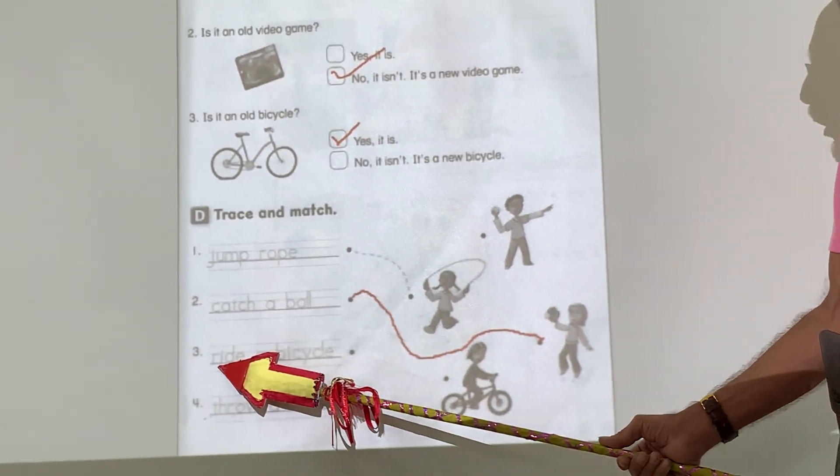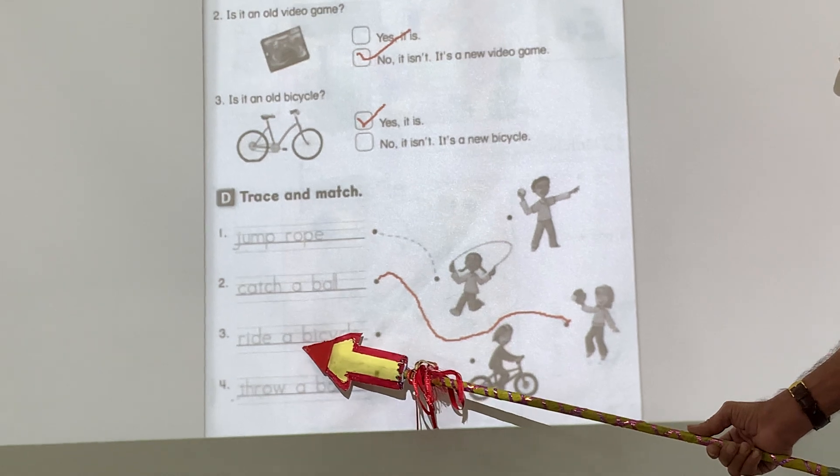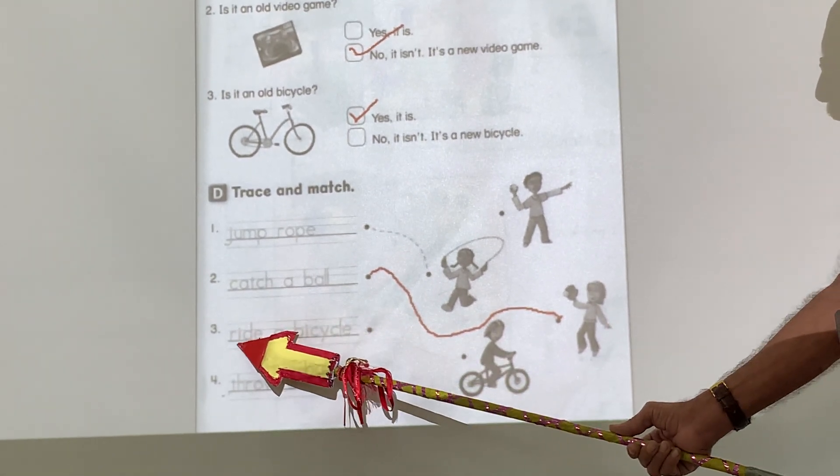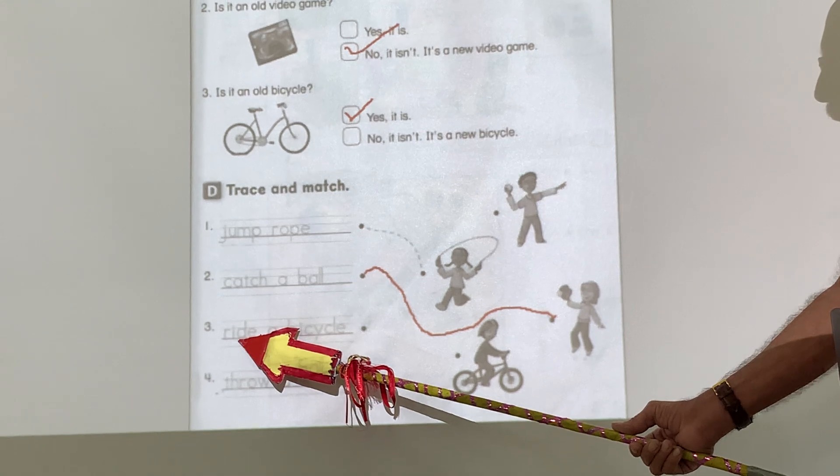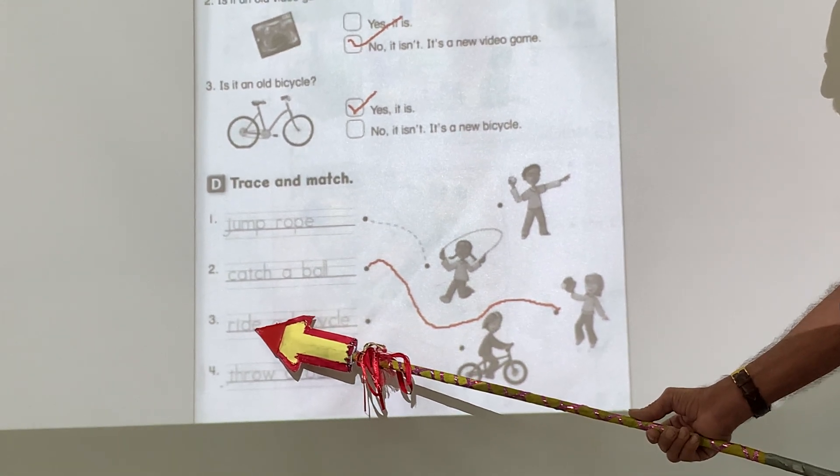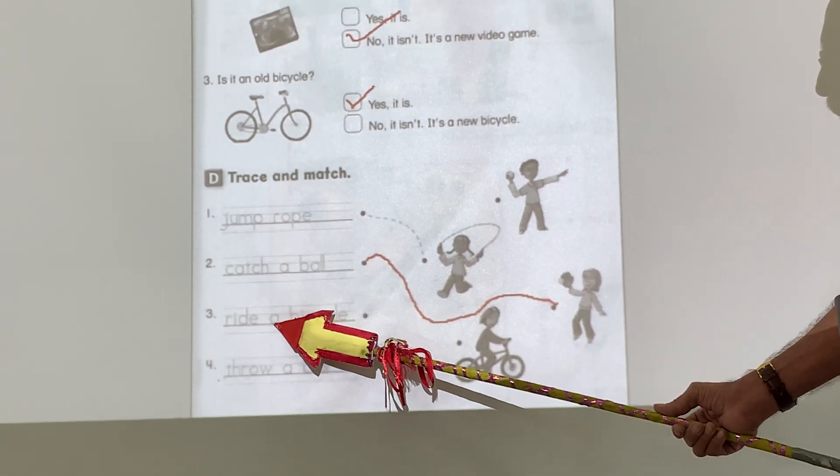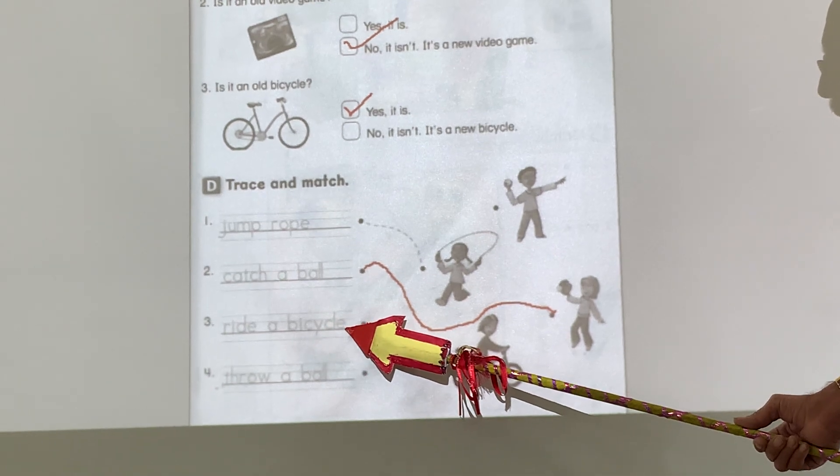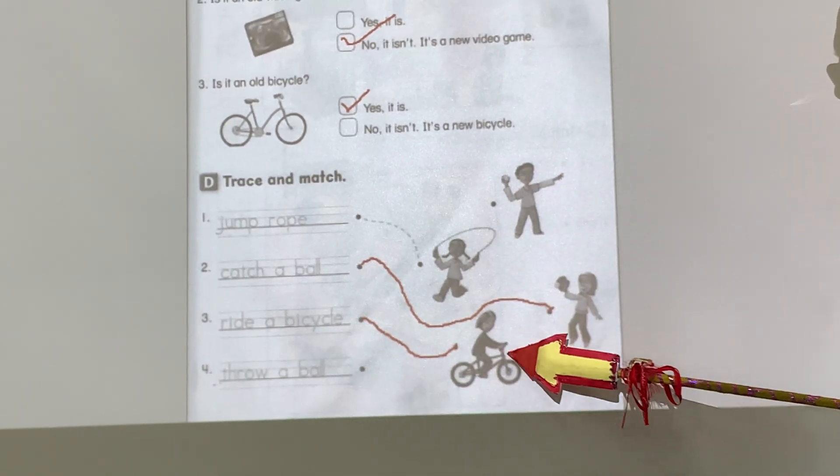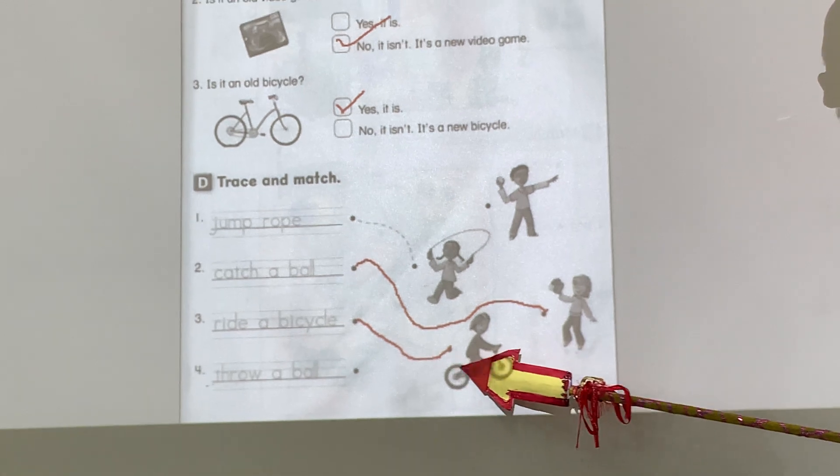Number three. Ride a bicycle. Ride. R-I-D-E. Ride. Ride a bicycle. Which one of these is riding a bicycle? There you go. That's the bicycle.